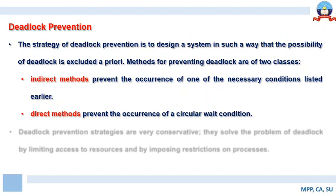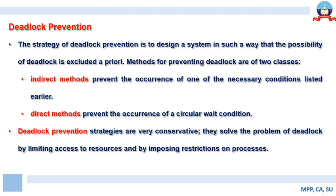The indirect method prevents the occurrence of necessary conditions such as mutual exclusion, hold and wait, no preemption, and circular wait. The direct method prevents the occurrence of circular wait exclusively. Deadlock prevention strategies are very conservative — they solve the problem of deadlock by limiting access to resources and by imposing strict restrictions on processes.